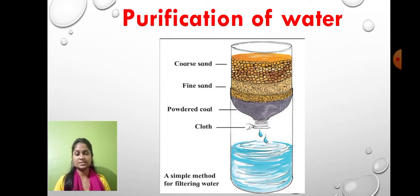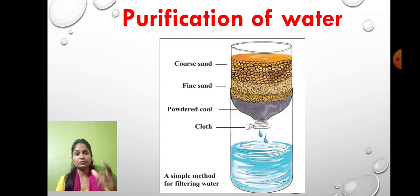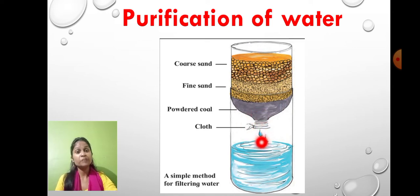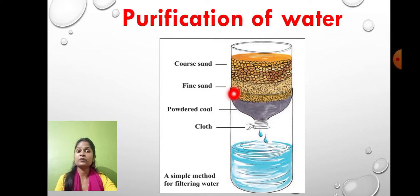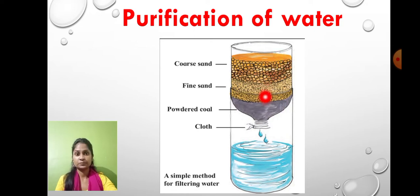We took an empty plastic bottle and cut it into two parts. The mouth part we inverted, as you can see in the picture. At the bottom, we used a cotton cloth, and on top of that we put powdered coal. And again on top of that, we used fine sand and coarse sand. We then put muddy water in and allowed it to pass through all three layers.